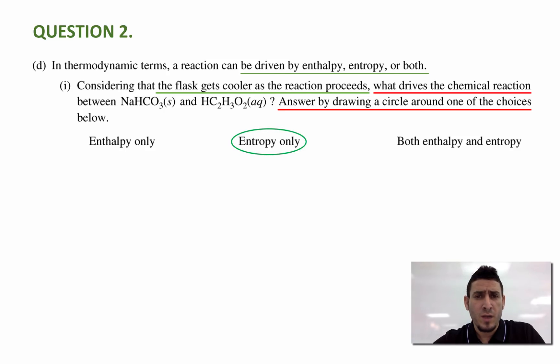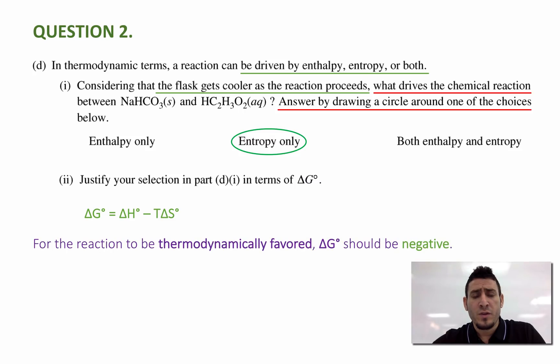Now in part double i, I will be explaining why. In part double i, it says justify your selection in part d i in terms of delta G zero. Now we know that delta G zero, which is the free energy at standard conditions, is equal to delta H zero minus T delta S zero.